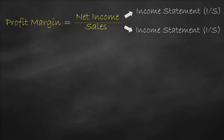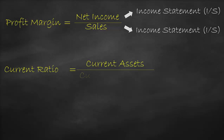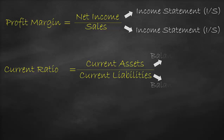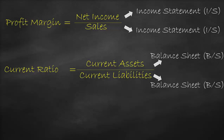The current ratio is current assets divided by current liabilities. We get both current assets and current liabilities from the balance sheet. Therefore, to compare apples to apples again, we use the current assets and current liabilities from the same year.